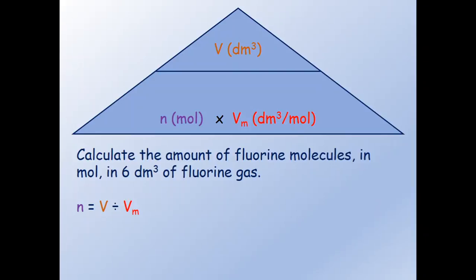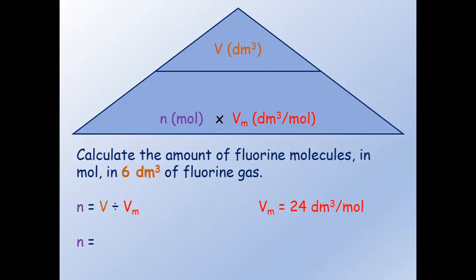The volume is given in the question — it's 6 decimetre cube — and Vm we have to remember because it's the same for every gas: it's 24 decimetre cube per mole. Now we just have to plug those two numbers into our equation, so we get n equals 6 decimetre cube divided by 24 decimetre cube per mole, and this gives us an amount of fluorine molecules of 0.25 mole.